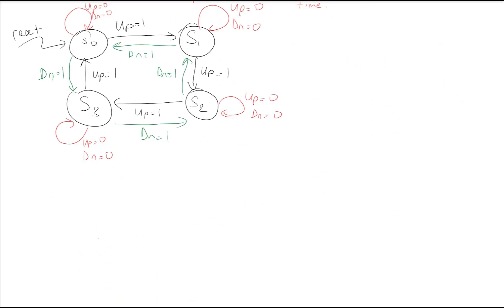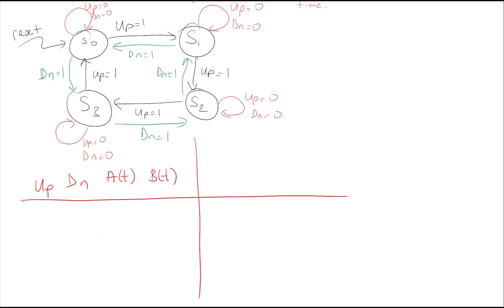Now let's write our state tables. Since we have four states, we can use two flip-flops to represent our states. For our inputs we will have up, down, and let's call our flip-flops AT and BT. These are our inputs, and for our next states we will have AT+1 and BT+1.